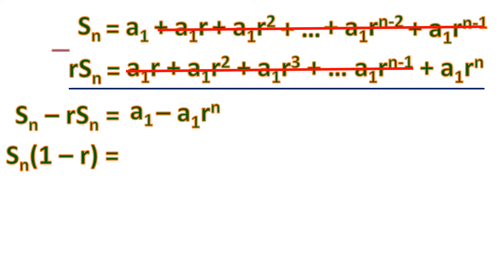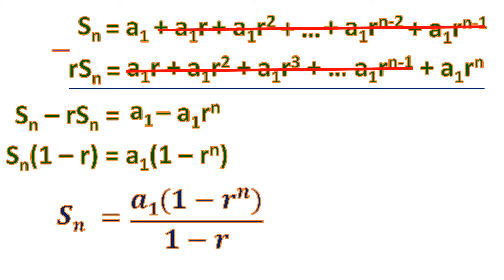We factor out a sub 1 on the right side, then divide both sides by 1 minus r. The result is: S sub n equals a sub 1 times (1 minus r to the n) over (1 minus r). To avoid a denominator of zero, r must not equal 1.